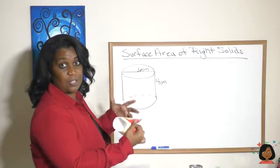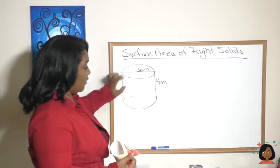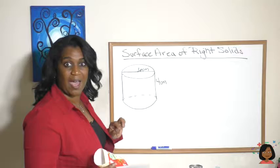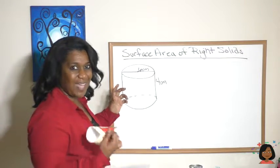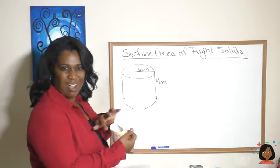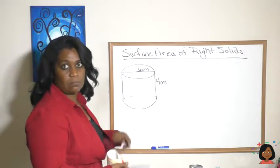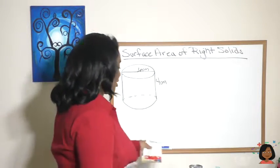It happens to be the circumference of the cylinder, of the circle of the cylinder. So we're going to need to find the area of the top circle, the area of the bottom circle, and then the area of the rectangle. But to find that length we'll need to find its circumference of that circle. It'll make sense as we go along. So let's get started.